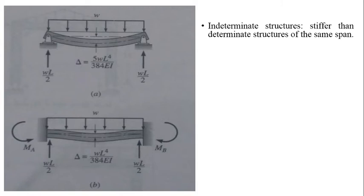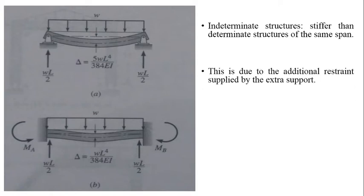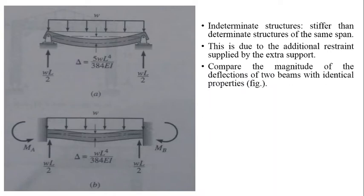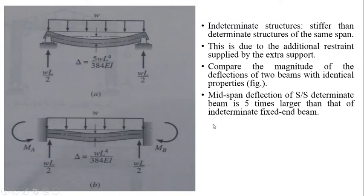Indeterminate structures are stiffer than determinate structures, even though they are of the same span. This is due to the additional restraint supplied by the extra support. Let us compare the magnitude of the deflection of two beams with identical properties. Midspan deflection of simply supported determinate beam is 5 times larger than that of indeterminate fixed-end beam.